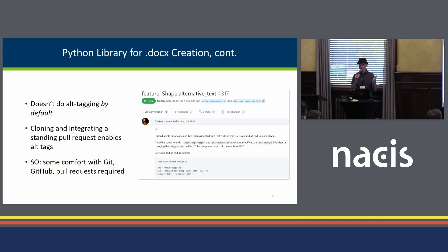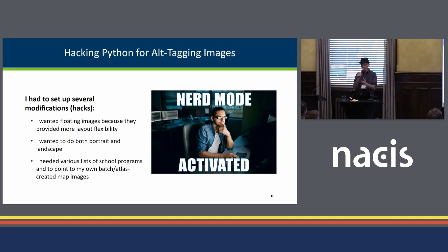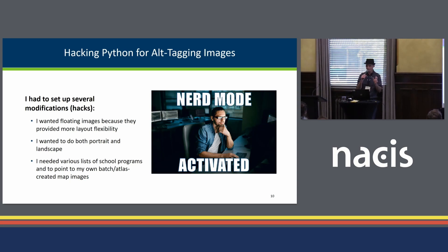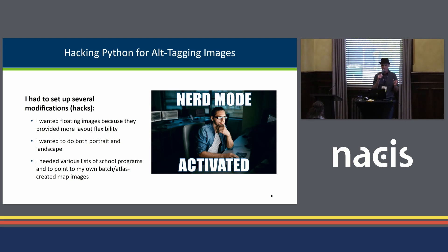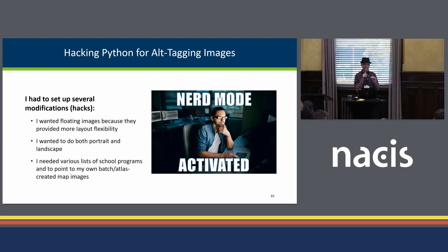I couldn't leave well enough alone — that's not enough just by itself. I need to get a little bit more creative. I had several modifications. I started with some code that a friend of mine created. I wanted things like floating images because they gave me more layout flexibility. I wanted to do both portrait and landscape. And an important part for accessibility and usability, I needed lists of every school program in that school district to be added to the end of that PDF, so folks that are blind or using screen readers could have an alternative way to consume the main pieces of information.